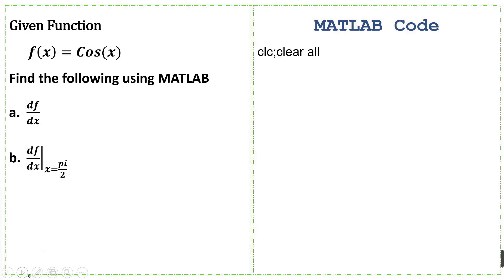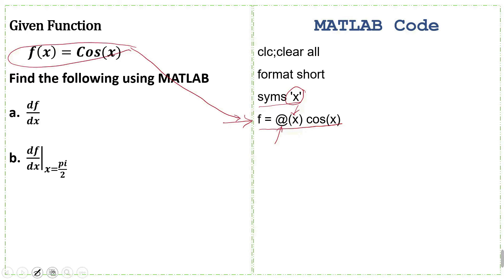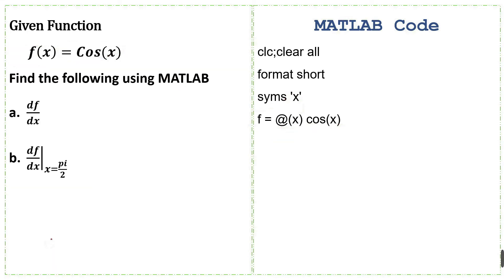So let's start writing the MATLAB code. The initial commands are clc and clear all. Next, format short, to get answers up to four decimal places. Next, we use the SYMS command to create a symbol x as a variable. Then we write the function handle: f = @(x) cos(x). This is the way how we write a function in MATLAB.